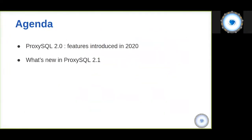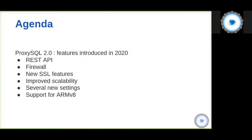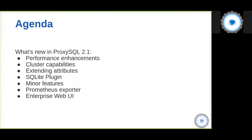Our agenda: we're going to discuss all the features introduced in 2019 related to ProxySQL 2.0, and also what is new in ProxySQL 2.1, which is going to be released very soon. For 2.0, we'll cover the REST API, the firewall, new SSL features, improved scalability, new settings, and ARM processor support. For 2.1: performance enhancements, new cluster capabilities, extended attributes, the SQLite plugin, the Prometheus exporter, and the enterprise web UI.